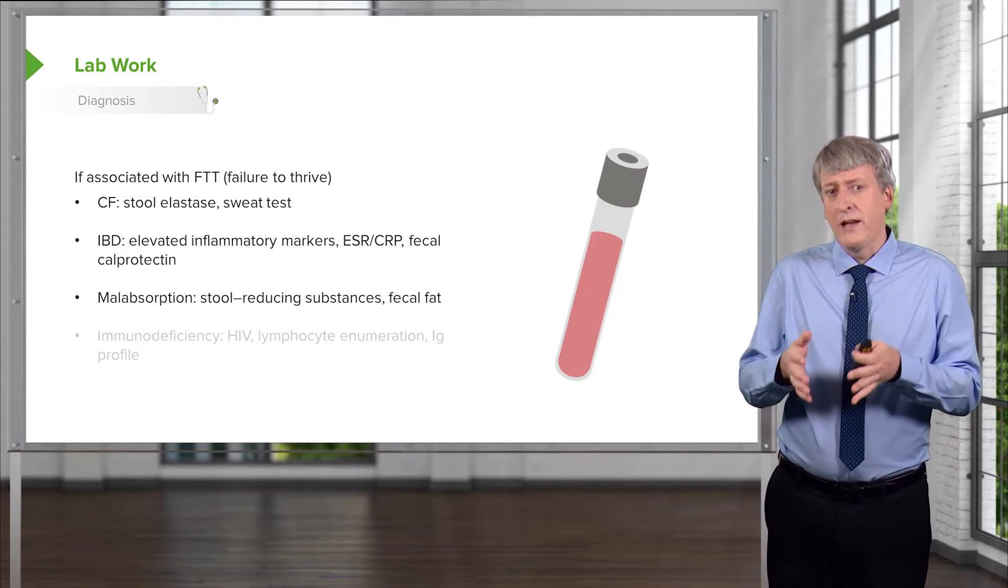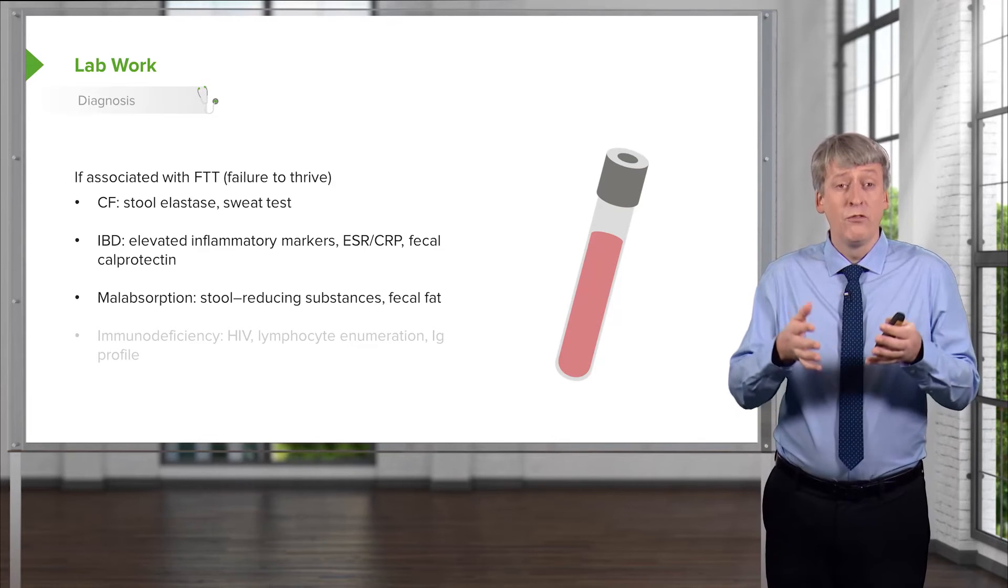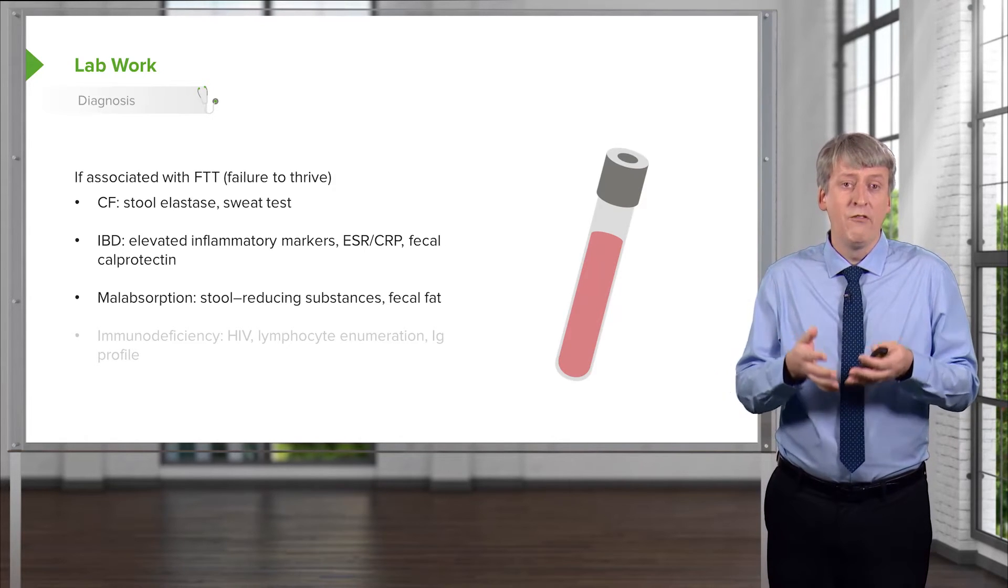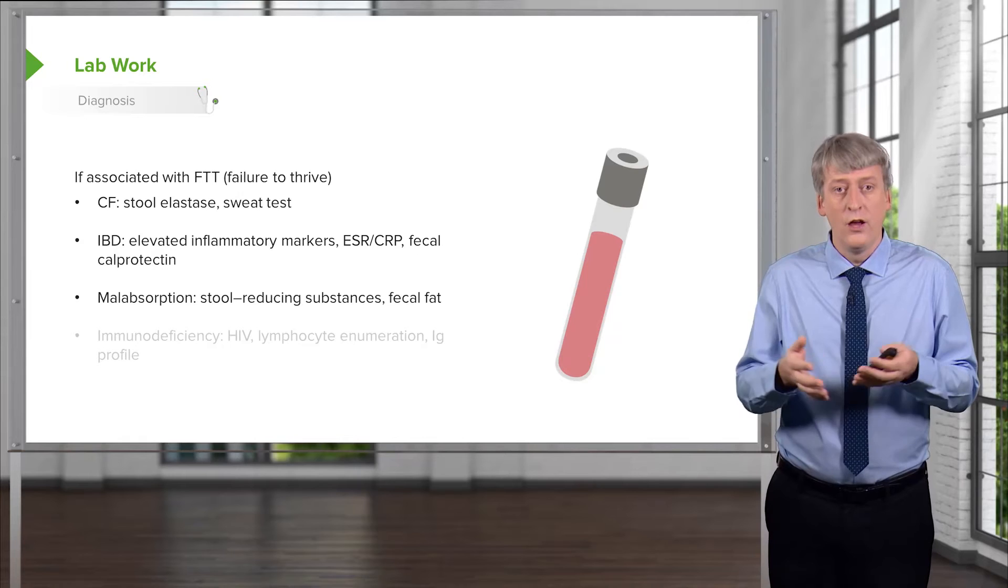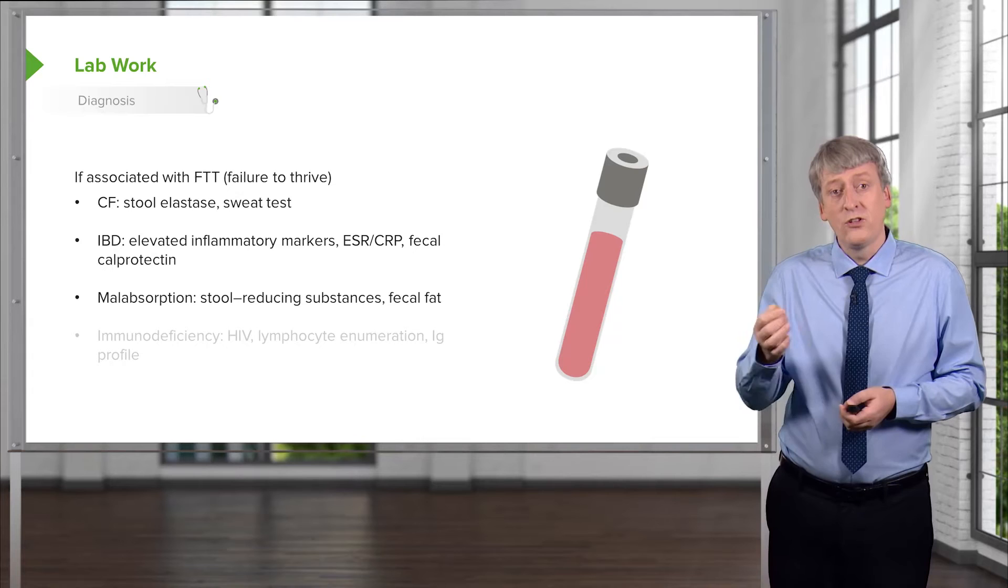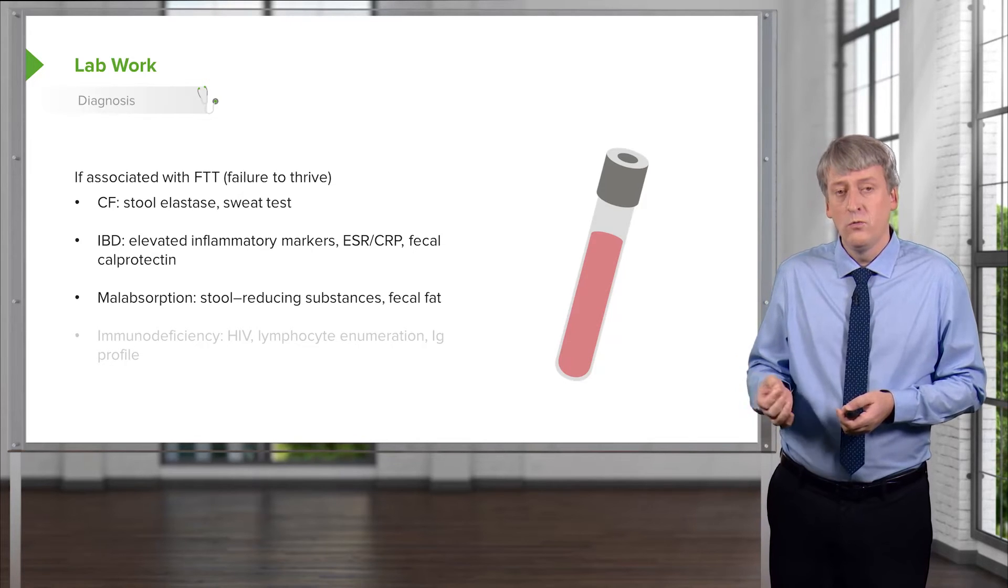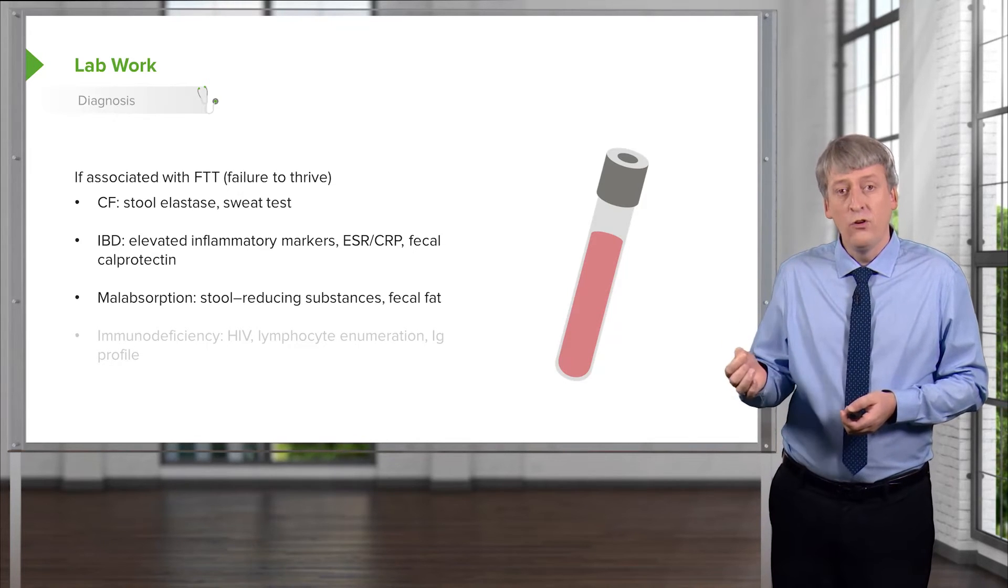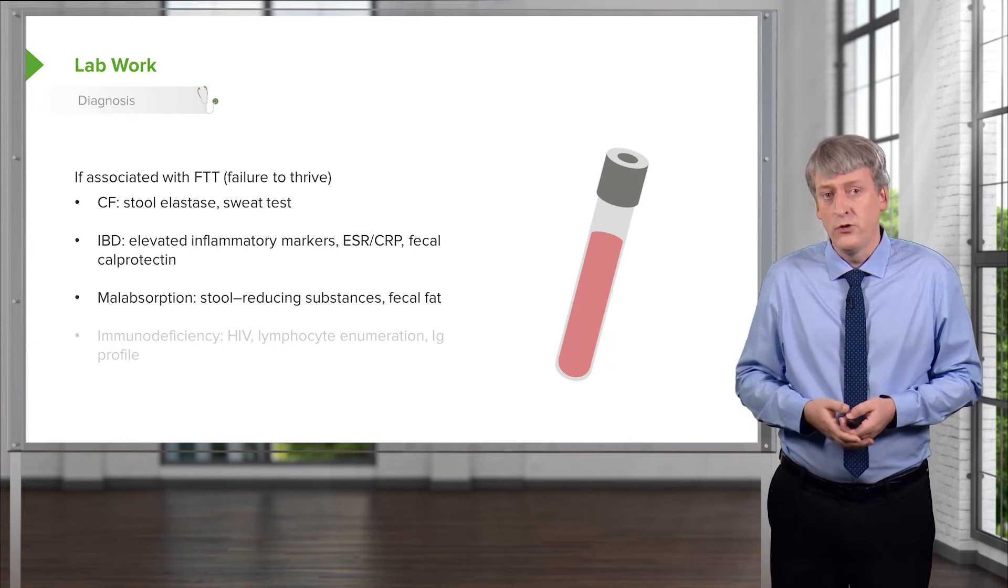For patients where we suspect malabsorption, a child with, for example, edema, who might have a low protein level causing them to be edematous, we can check for things like stool reducing substances, which would check for sugar, fecal fat, or alpha-1-antitrypsin in the stool.